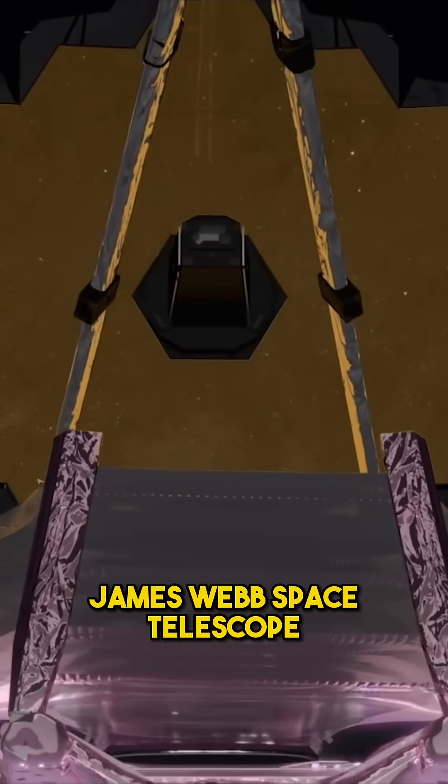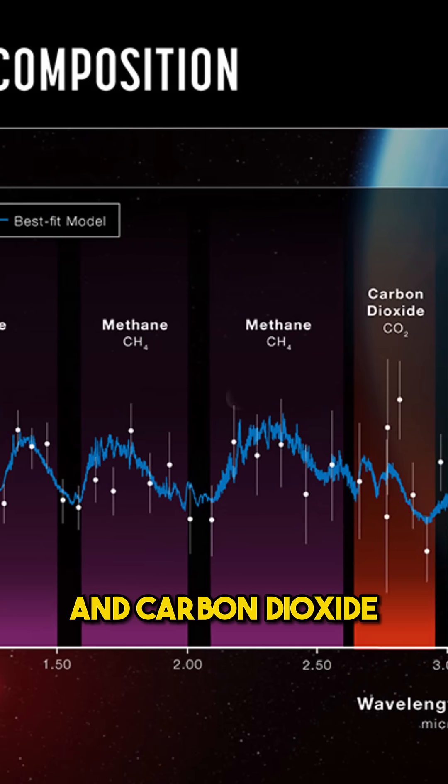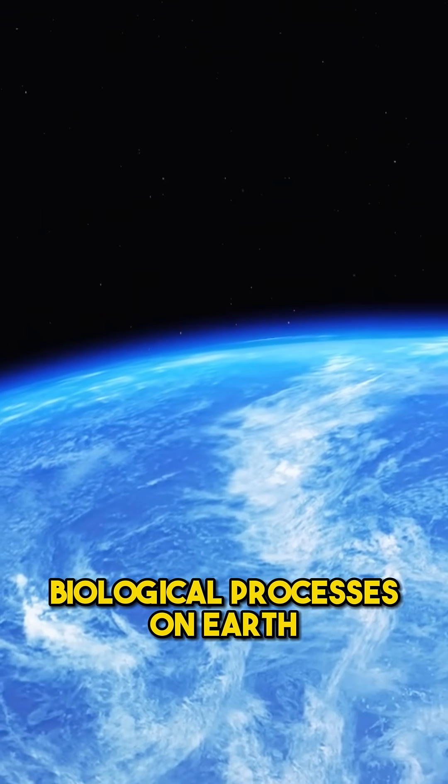How do we know that? Well, thanks to the James Webb Space Telescope that has detected carbon-bearing molecules such as methane and carbon dioxide, which are produced by biological processes on Earth.